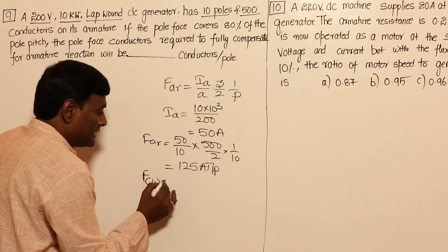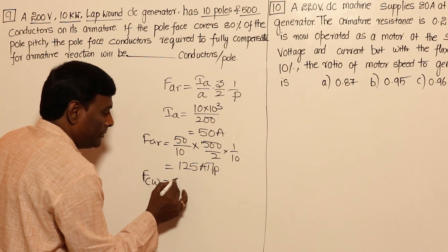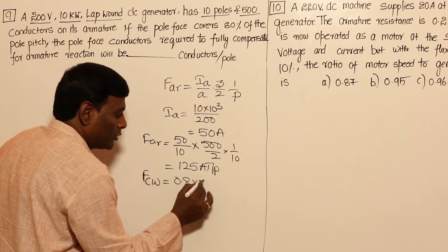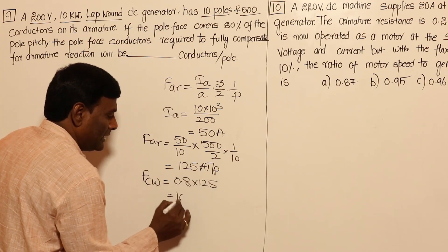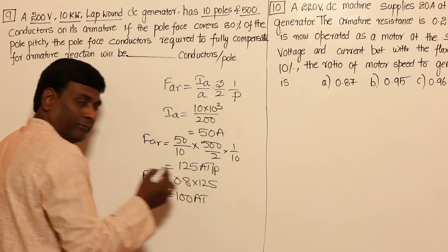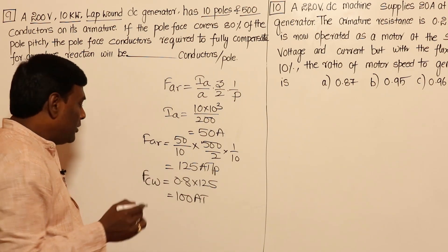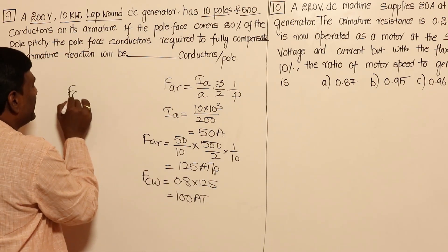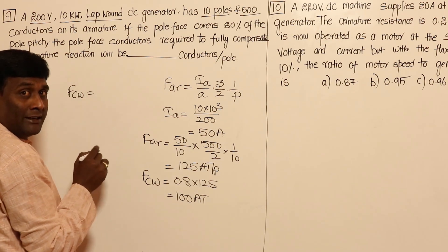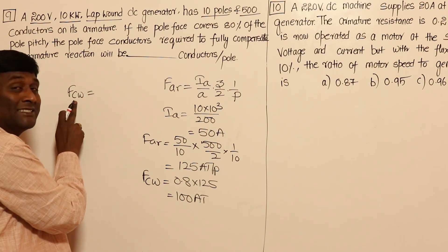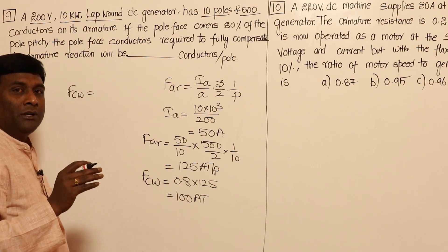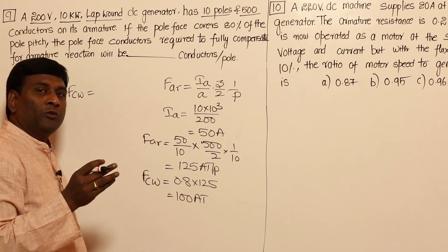Since the pole shoe covers 80% of the pole pitch, 80% of the armature MMF must be compensated by the compensating winding. So MMF to be compensated = 80% of 125 = 100 ampere-turns per pole.